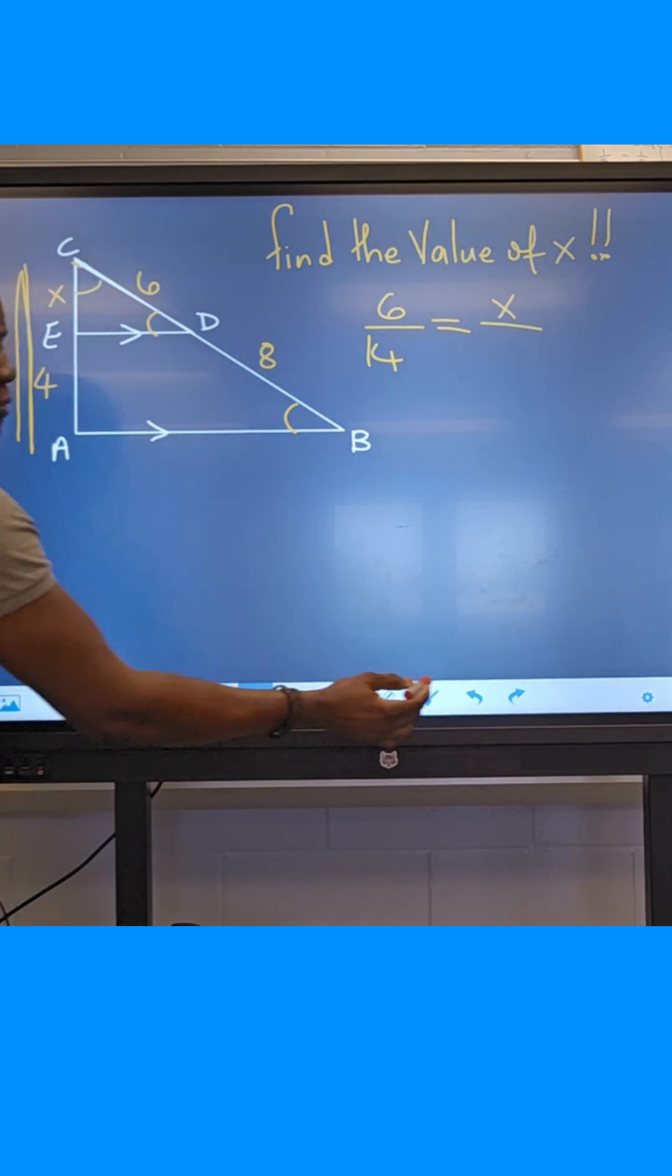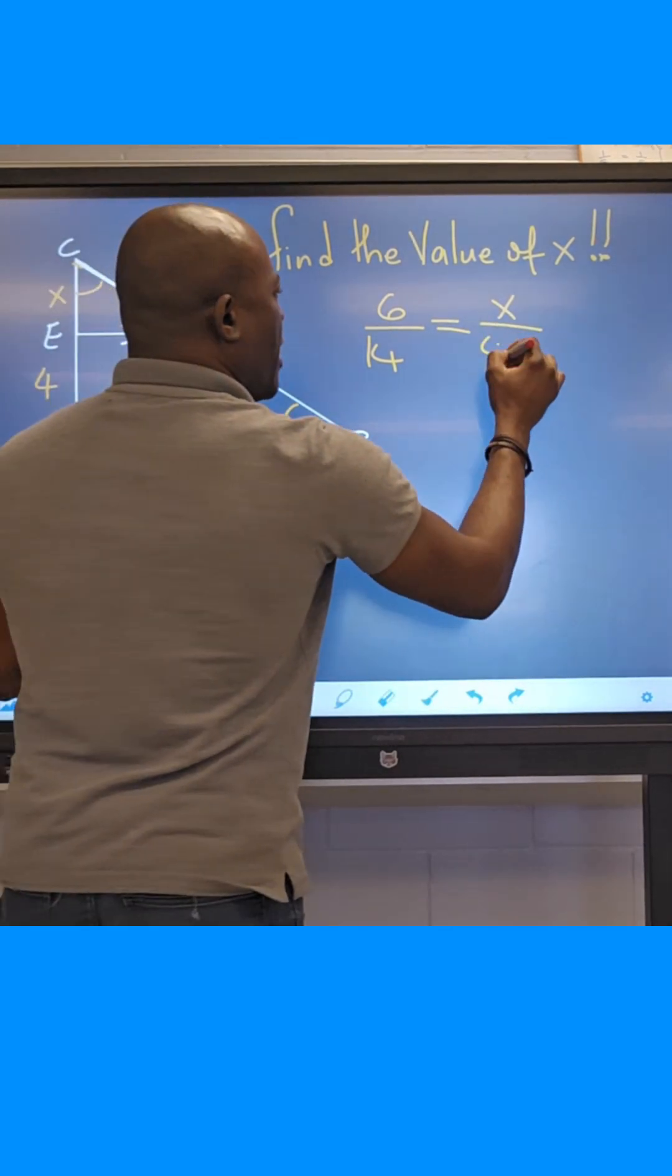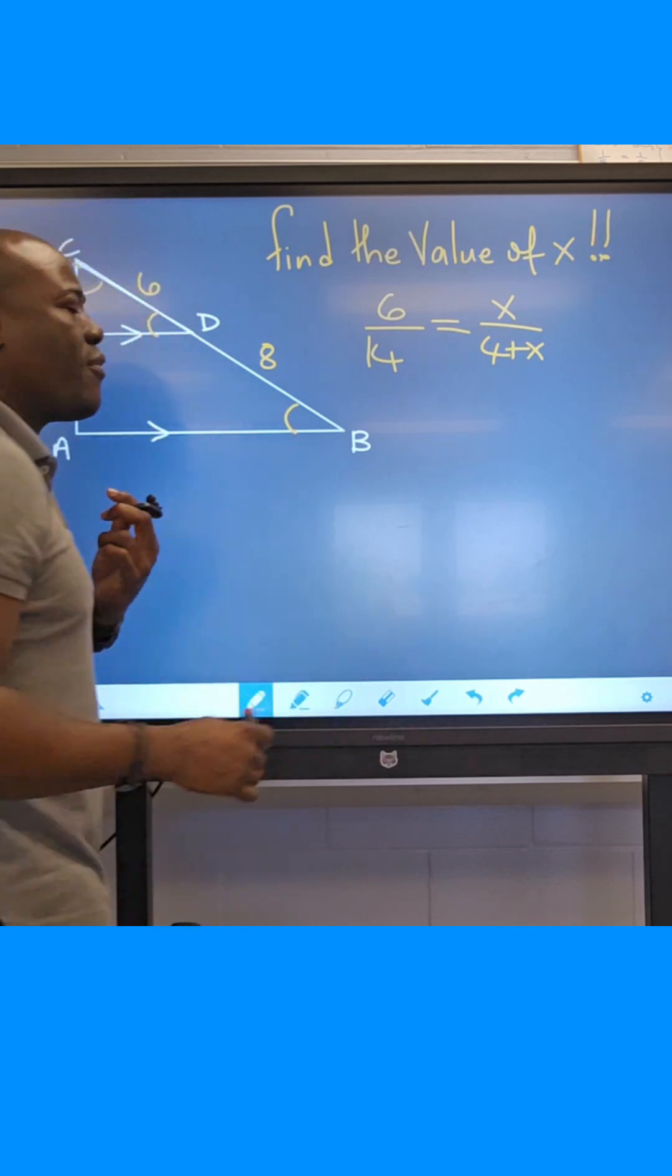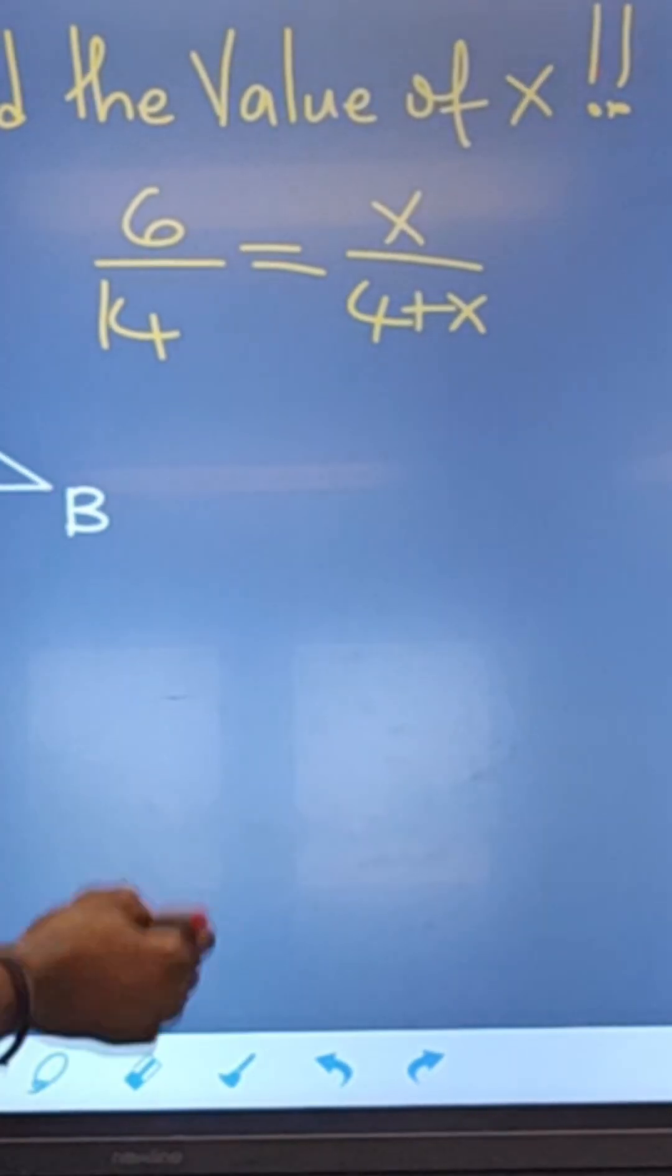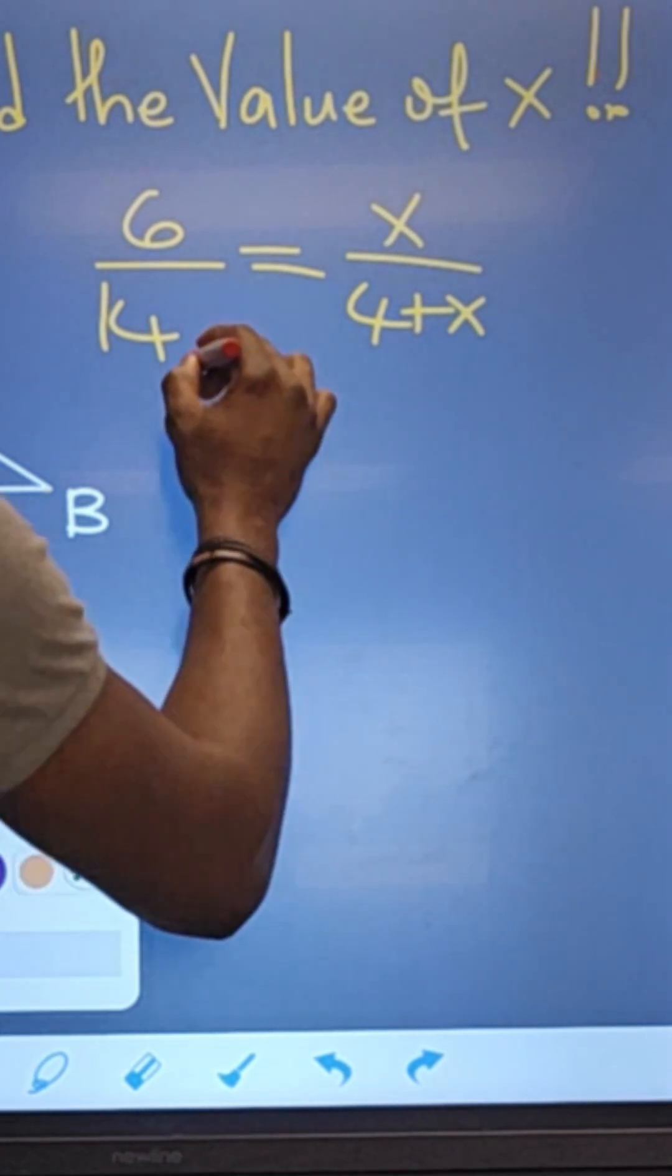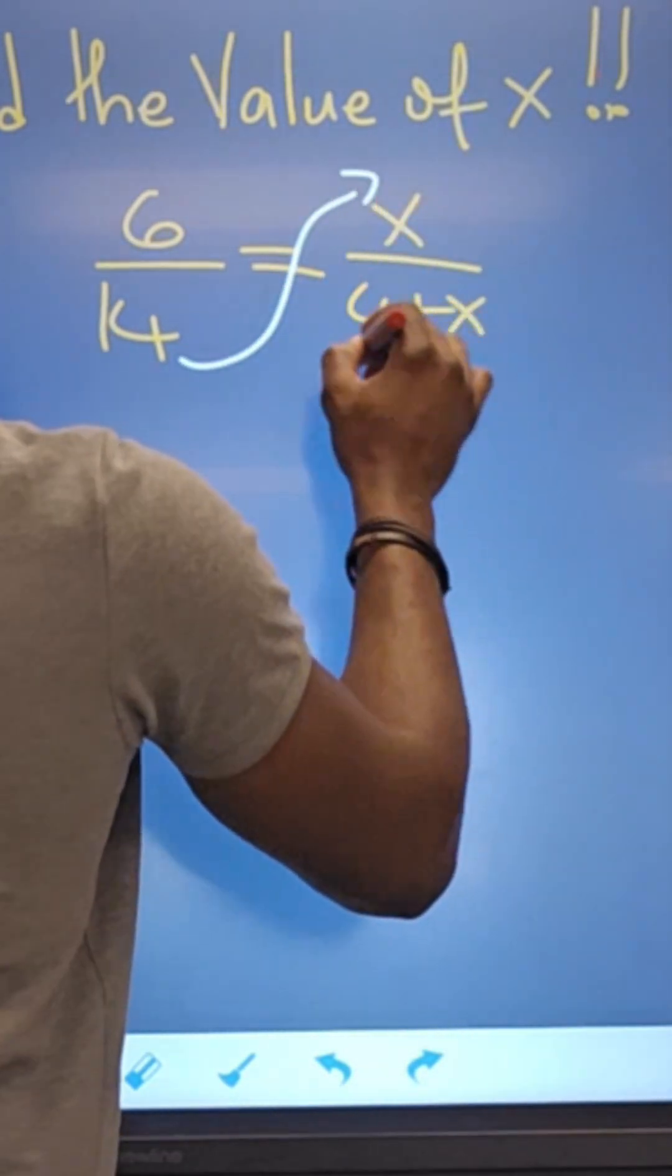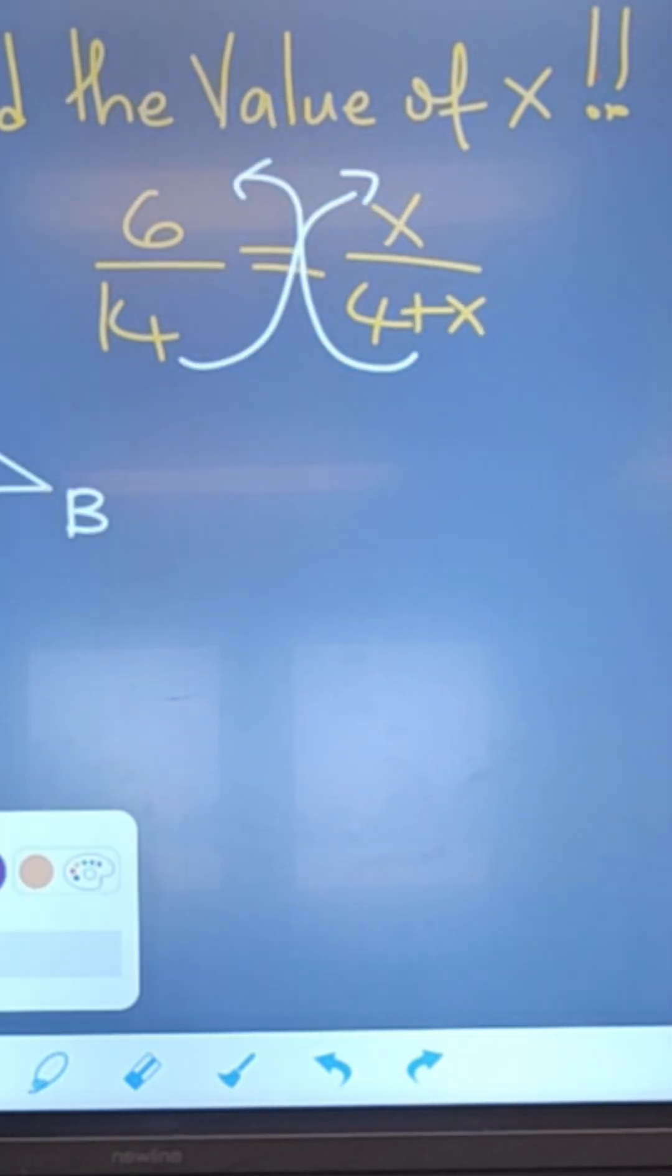So X plus 4, and from this I can now solve to find X. So let us get into it. I'm gonna employ cross multiplication. So let's work this up.